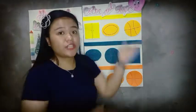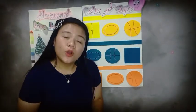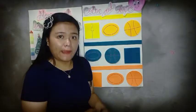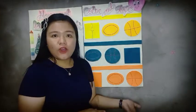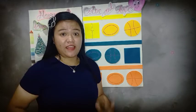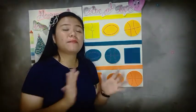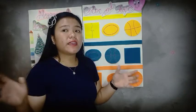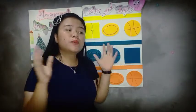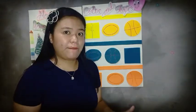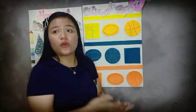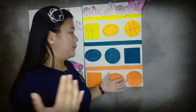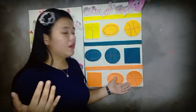We have finished sorting by color. Now we will sort by shape. Don't mind the color this time — we focus on the shape. We will group together objects that are the same shape: those that are circle, those that are square, and those that are oval.